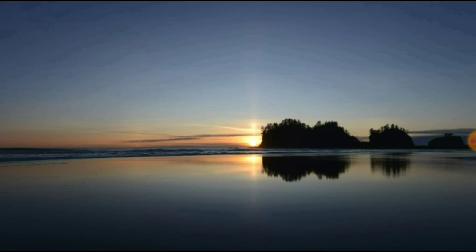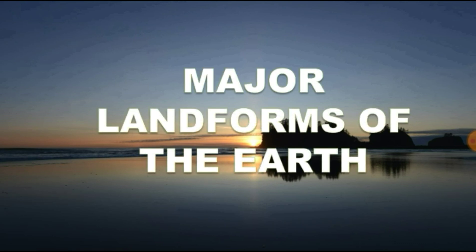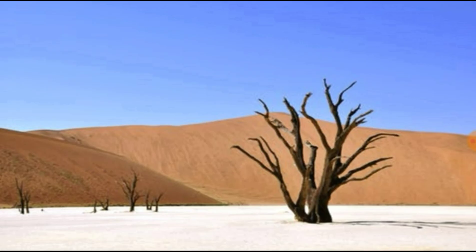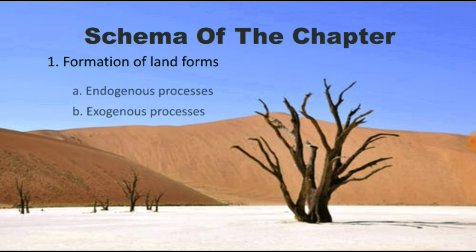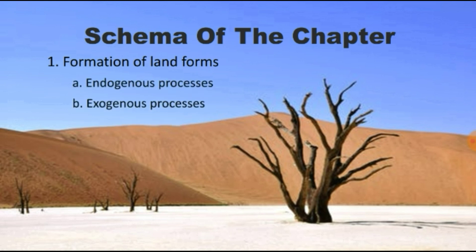Dear students, welcome to Geography class. Today we are going to deal with a new chapter: Major Landforms of the Earth. Let us see the schema of the chapter in brief. The first topic we are going to deal with is the formation of landforms — how these landforms are formed — and under that topic we will deal with two processes called endogenous process and exogenous process.